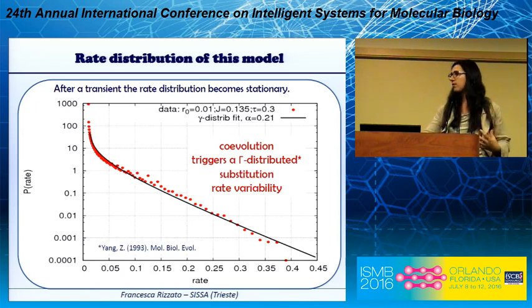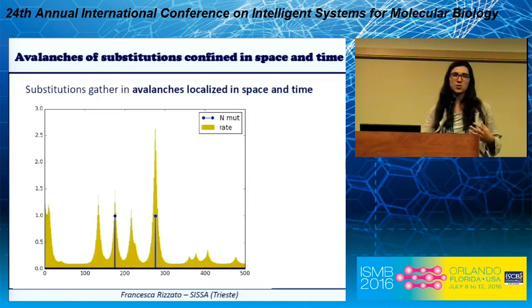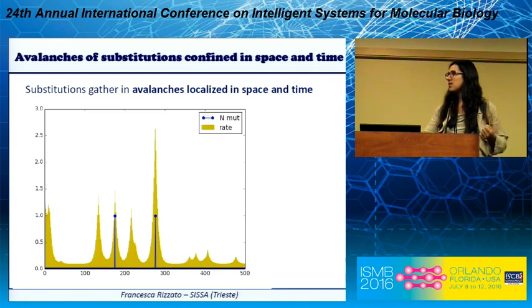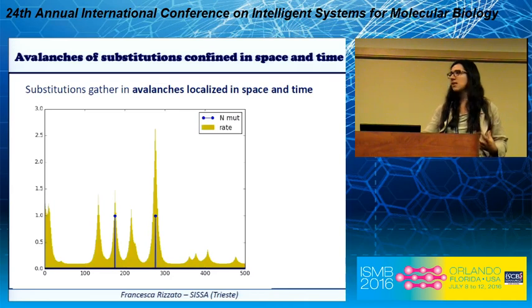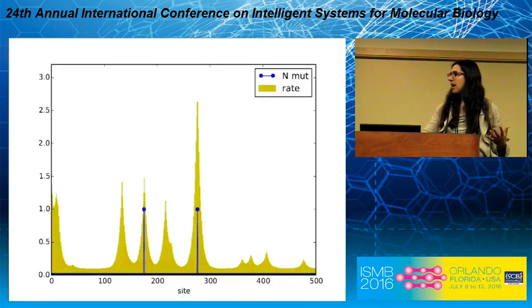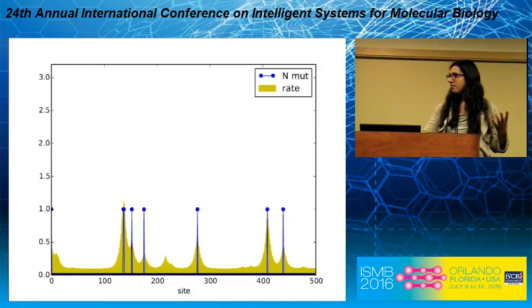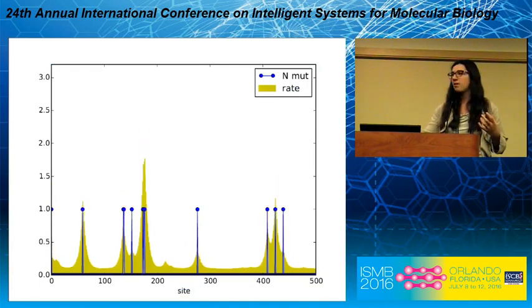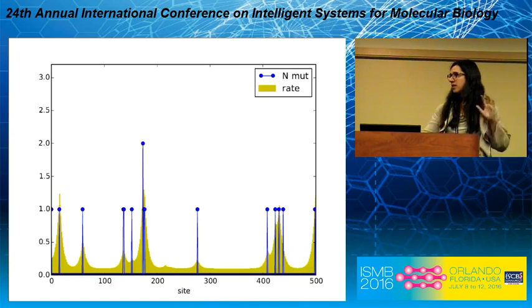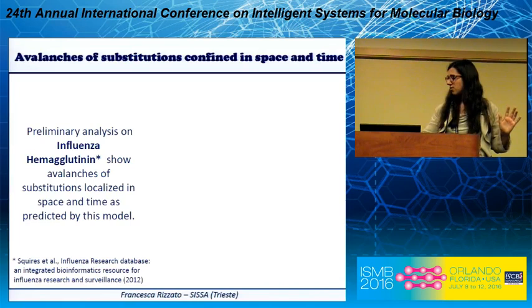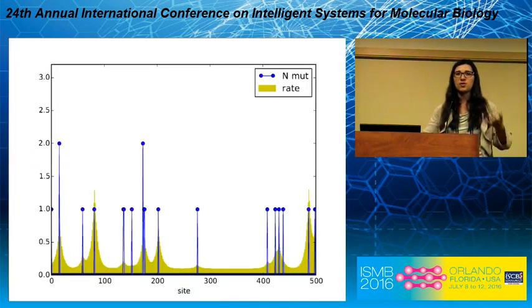The last quantity I want to discuss is how substitutions are localized in time and space. Our model predicts that they are gathered in avalanches localized in both space and time. In this animation you can see the rates in yellow varying in time, and on top of that the blue points indicate the sites that mutated — and these substitutions are gathered and occur at similar times.